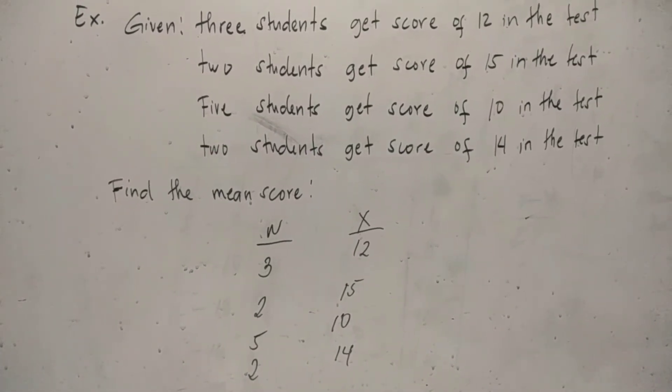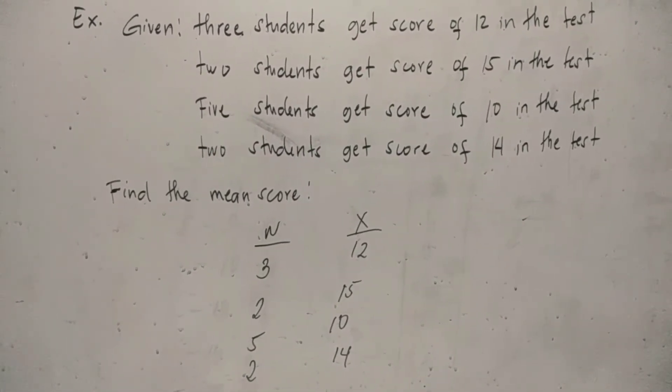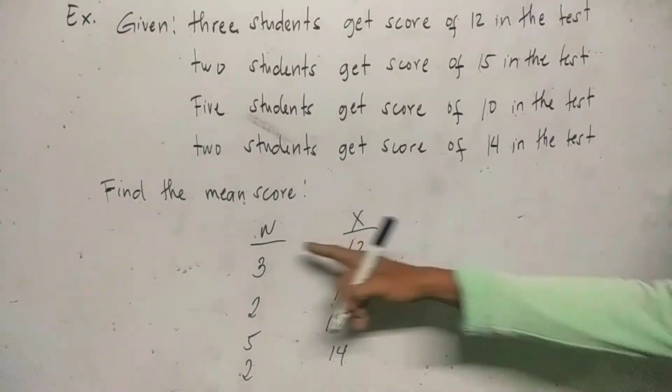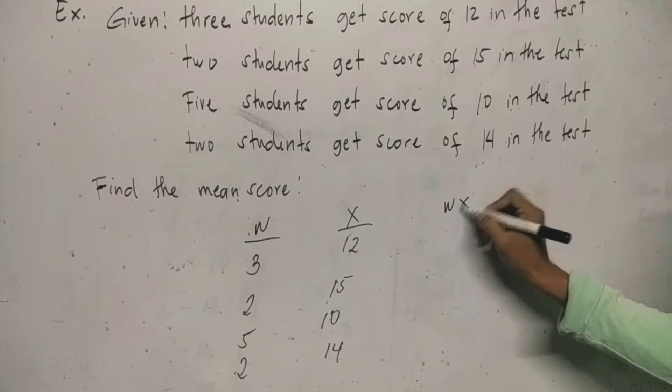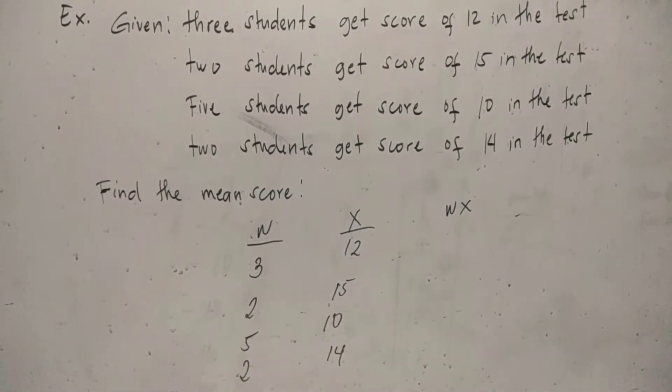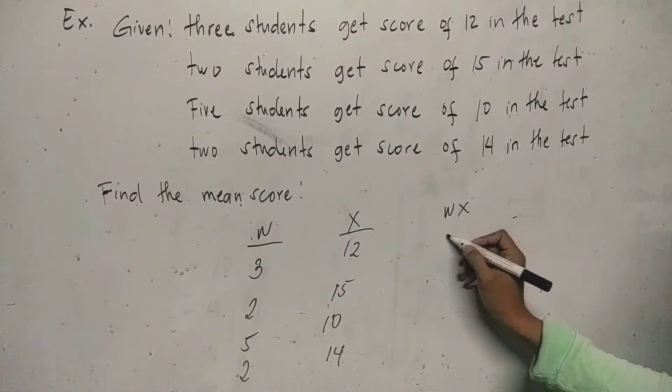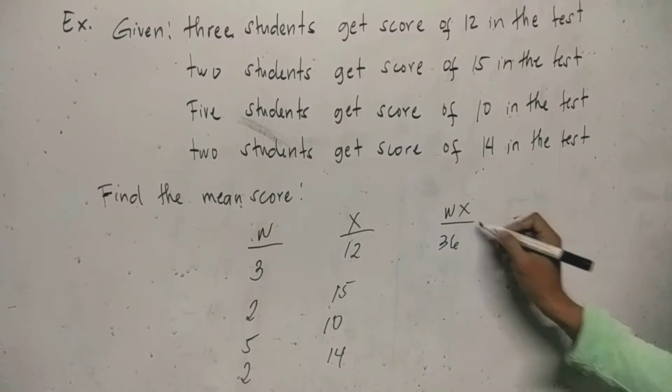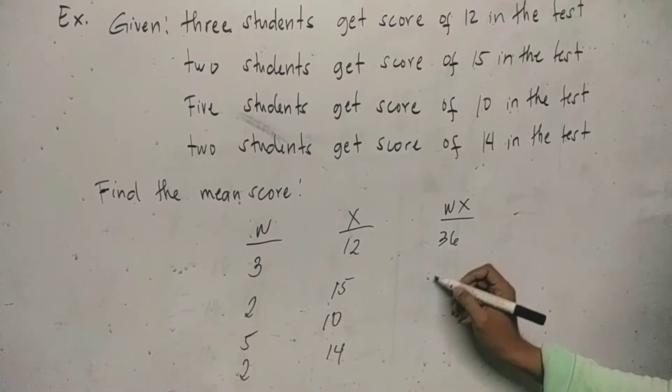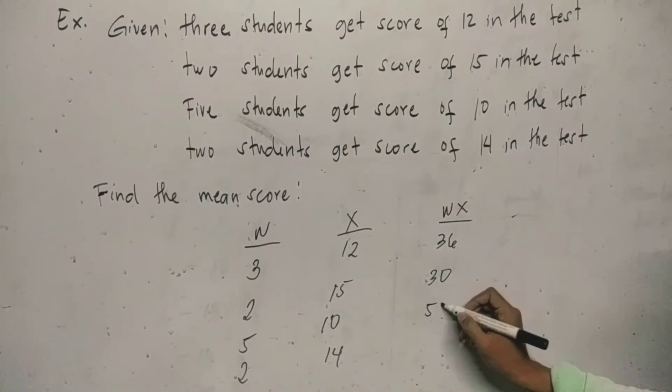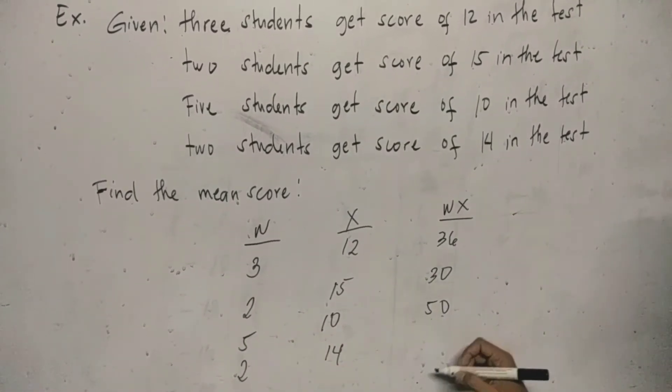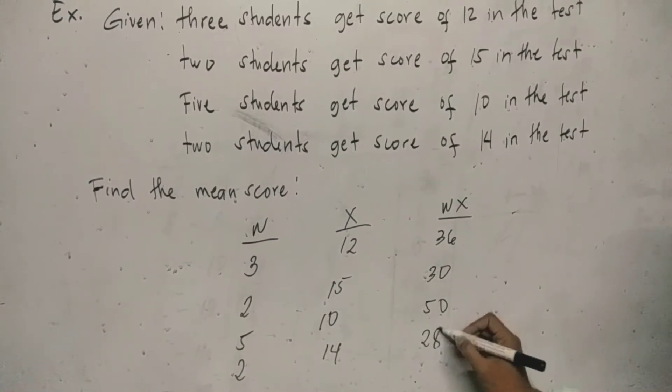Next, find the product of the two, corresponding values and weights. We multiply them. So 3 times 12 is 36. Then 2 times 15 is 30. 5 times 10 is 50. 2 times 14 is 28.